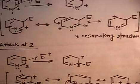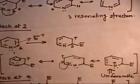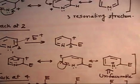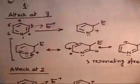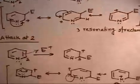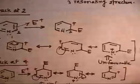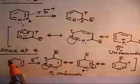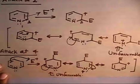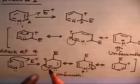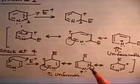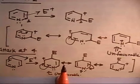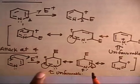Attack at position 2 has one resonating structure with a positive charge on nitrogen, making it less favorable than attack at position 3. Now let us attack at position 4: the electrophile attaches at 4, the double bond flows giving a positive charge; writing resonating structures, this flows giving positive charge on nitrogen. So again there are 3 resonating structures and one of them is unfavorable because it contains a positive charge on nitrogen.